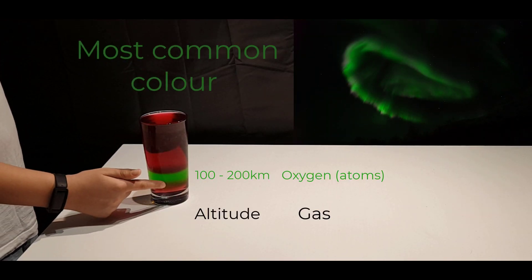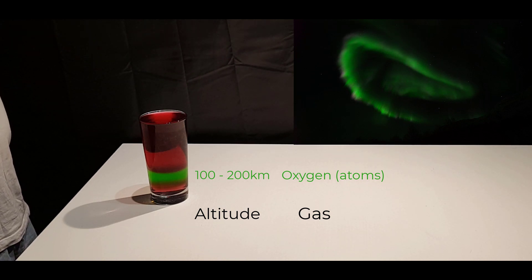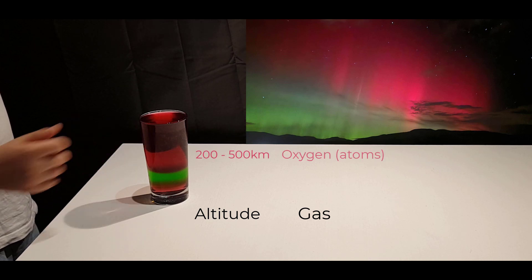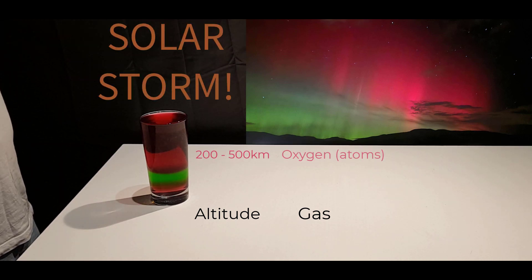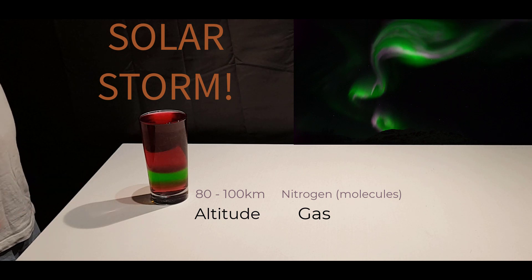Most auroras come from energised oxygen atoms; this usually produces green light. But higher up, at times when the sun sends us more charged particles than usual, known as a solar storm, oxygen atoms can produce a rare red aurora. And nitrogen molecules can give a violet or red lower edge.